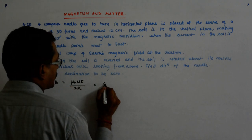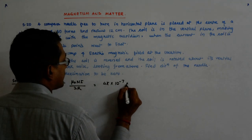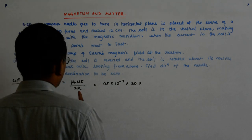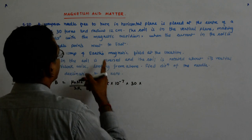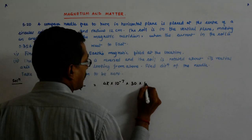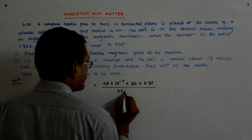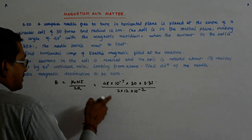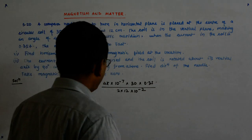So that is equal to 4 pi into 10 to the power minus 7 into 10 to the power minus 2 because it is 12 centimeter. So B is that much.